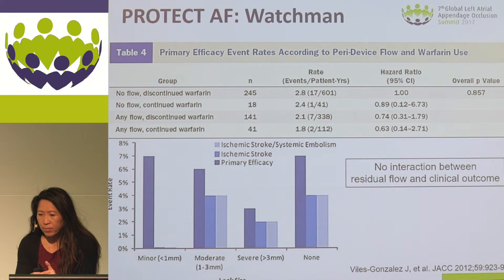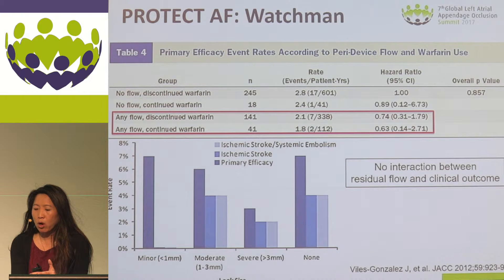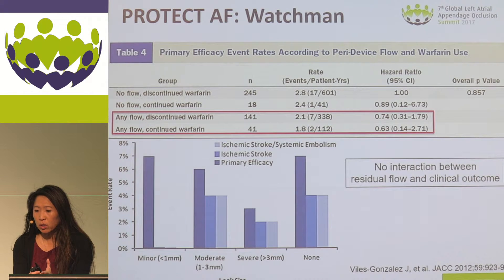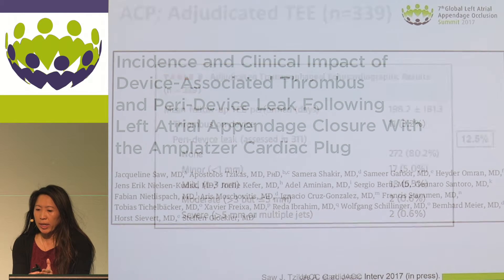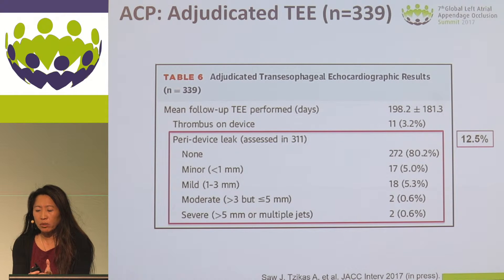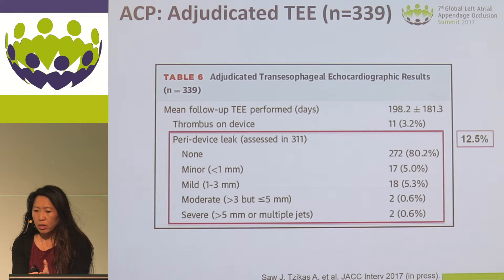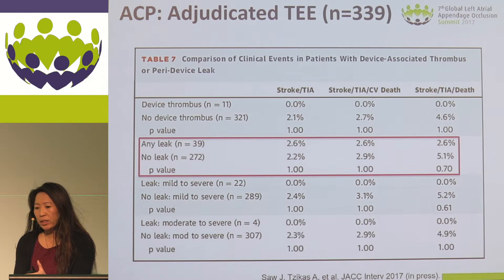So what is the implication of residual leaks? From the PROTECT-AF post hoc analysis, there is no interaction between residual flow and clinical outcomes. The presence of any flow, irrespective of being on anticoagulation post-procedure or not, did not increase the risk of thromboembolic events. Similarly for the ACP device, looking at adjudicated TEEs from a multi-center study of about 340 cases, the incidence of peri-device leak was 12.5%, with the majority again less than 3 millimeters. When we correlated the presence of leak to clinical events, we did not see any correlation to higher clinical events. So this is also reassuring.